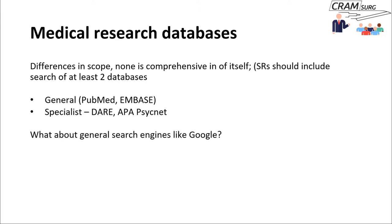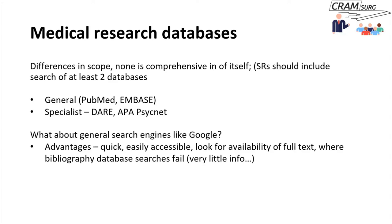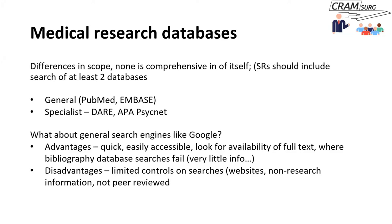Sometimes people ask why not just use Google. It's quick, you can access it easily, and sometimes there's no paper on PubMed addressing a particular clinical question but you can get some information on Google. However, with a Google search there's very limited control and you can land on all kinds of websites providing non-peer-reviewed information, patient information leaflets, and discussion forums. As long as you're aware of that and don't get carried away with what you find, it's probably not a terrible idea.